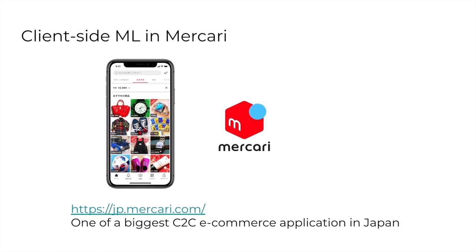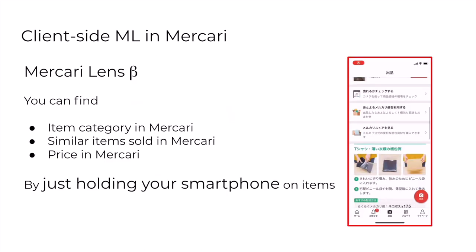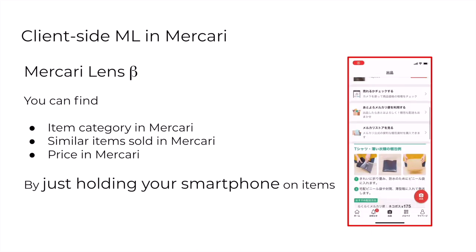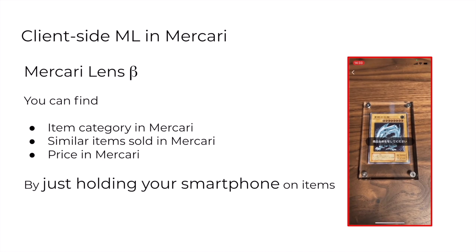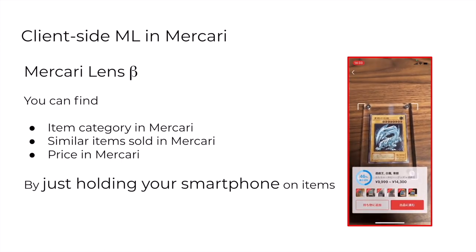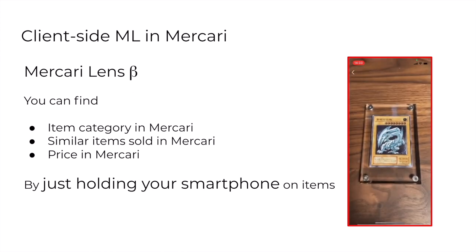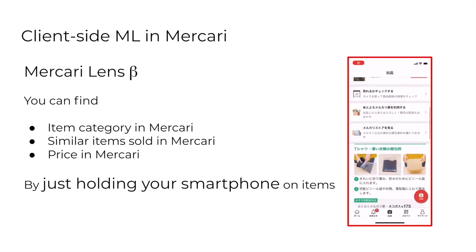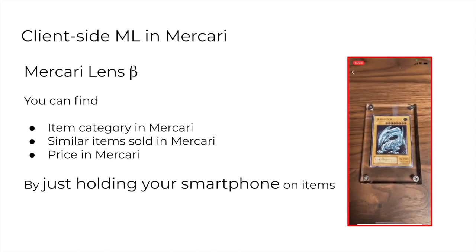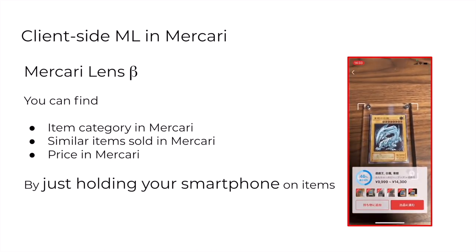I will share the use case in Mercari. Mercari is a C2C e-commerce platform. Customers can list an item on Mercari, and other customers can buy one. They released Mercari Lens Beta, which uses client-side ML technology. In this feature, by just holding your smartphone on an item, you can find the category of it in Mercari, the similar items sold in Mercari, and the price range of the similar items. You can check the market price very easily, one after another, since you don't need to take a photo or input any information.